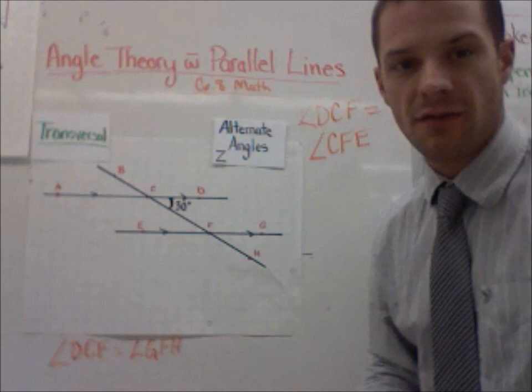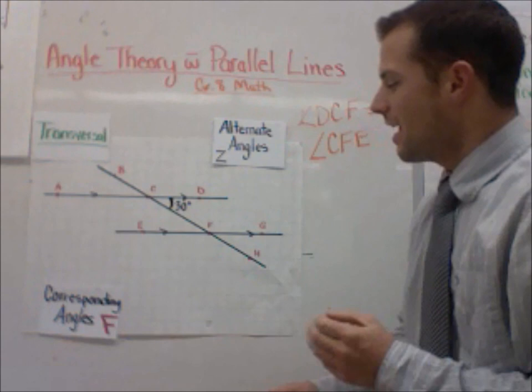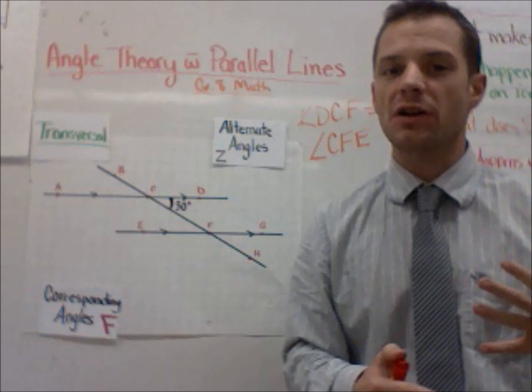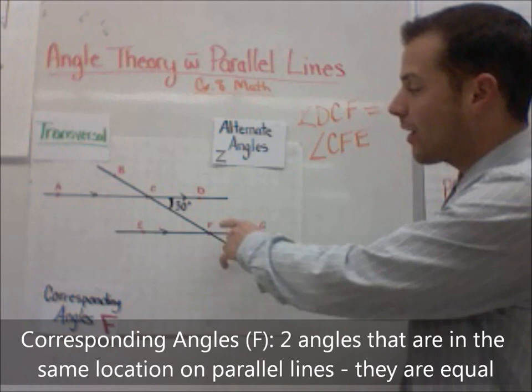The next kind of angle that I want you to look at is corresponding angles. And the corresponding angles that I'd like to look at are going to follow an F pattern. We're going to stick with this side of the diagram because we have this guy here. Again, corresponding angles, just like alternate angles, are two angles that are equal to each other.